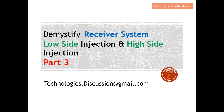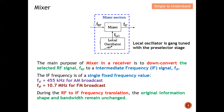Once again, sincere thanks for your strong support. Like I mentioned, low side injection and high side injection actually take place at the mixer. The main purpose of a mixer in a receiver is to down-convert the selected RF signal FRF to an intermediate frequency IF signal at FIF. This means the role of the mixer is to convert a high frequency to a low frequency, so FRF has a higher frequency compared to FIF.